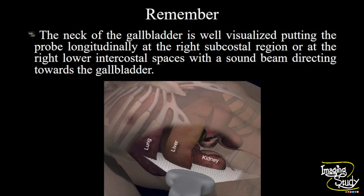Now the take-home message. The neck of the gallbladder is well visualized by putting the transducer longitudinally at the right subcostal region or at the right lower intercostal spaces with the sound beam directed towards the gallbladder. This is an excellent approach to see the neck of the gallbladder and you won't miss any stone at that point.